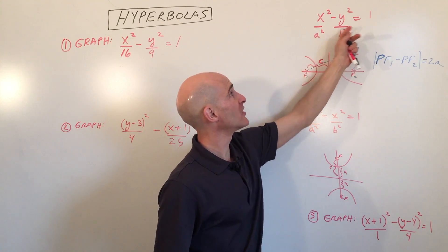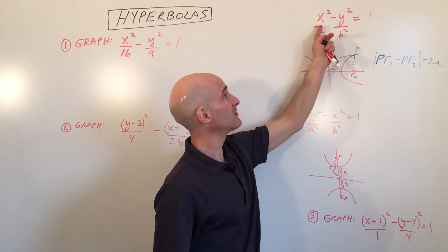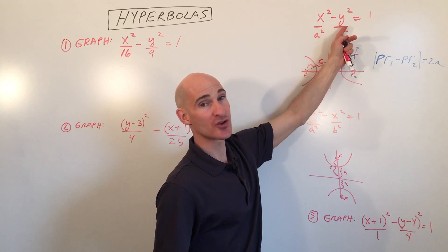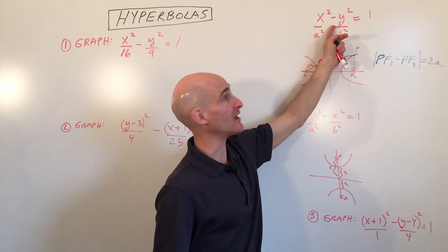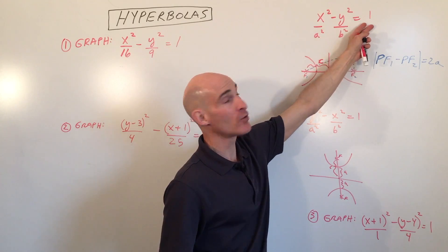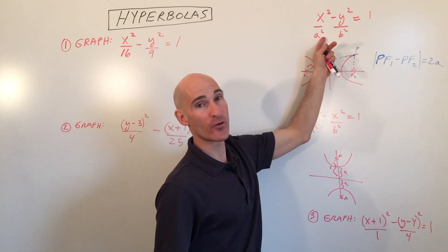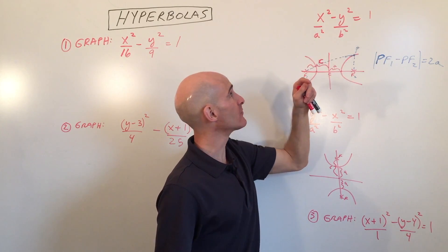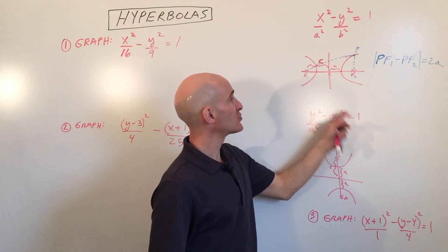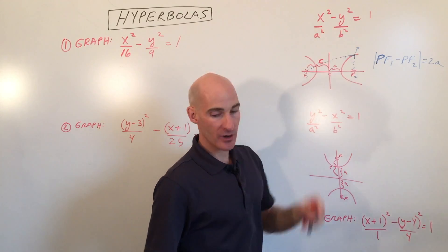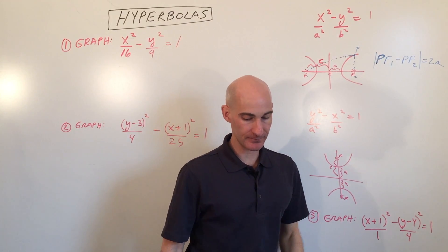It looks very similar to an ellipse except you're subtracting these two terms, as opposed to with an ellipse where you're adding. But they both equal 1 and they're both written in this fractional form. Now these are the two different forms, and one thing that you'll notice is that...